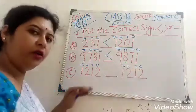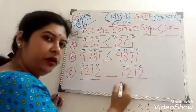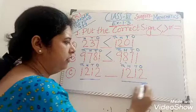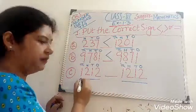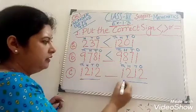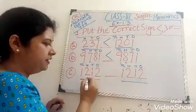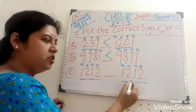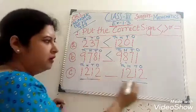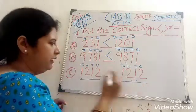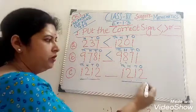Here we observe that both the numbers are 4-digit numbers. Now check one by one. In the 1000 place, here it is 1, here also 1. In the 100 place, it is 2, it is also 2. In the 10 place, it is 1, here also 1. And in the 1 place, here also 2, here also 2.